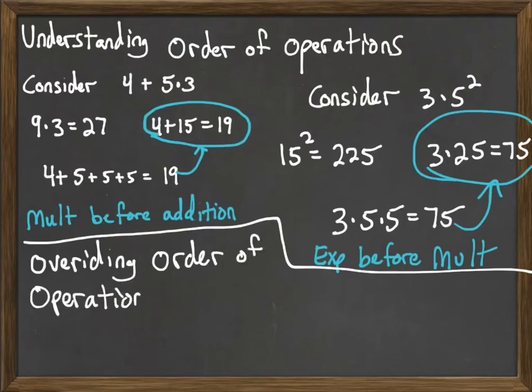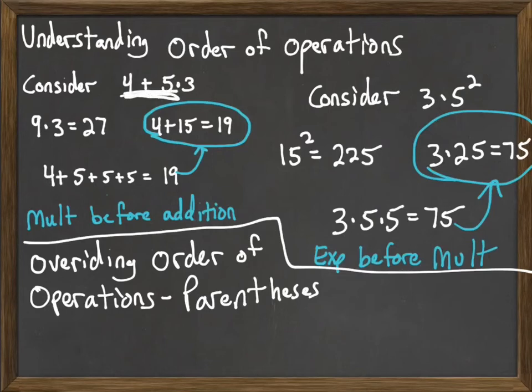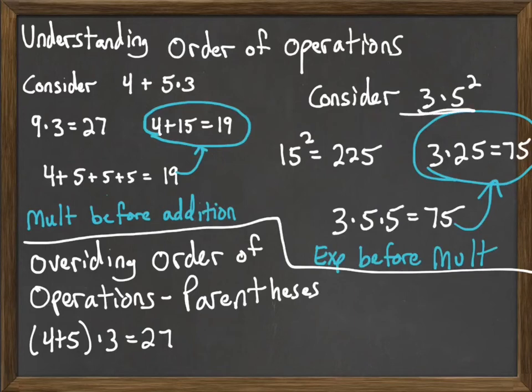Final thing is sometimes you may want to override order of operations, and that's where our parentheses or other grouping symbols come into play. If on the problem above we had wanted to add the 4 and the 5 first, we could write that down as 4 plus 5 inside parentheses times 3. Then we would add the 4 and the 5 to get 9 times 3 would be 27. In the other example, if we had wanted to multiply the 3 and the 5 first, we could write that down as 3 times 5 in parentheses and then squared. Then 3 times 5 would be 15, 15 squared would be 225. So parentheses are used to override our standard order of operations.